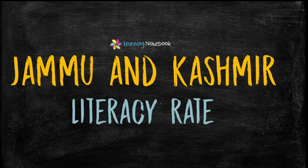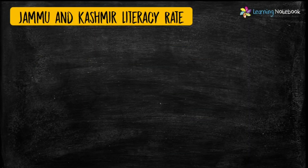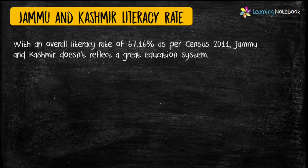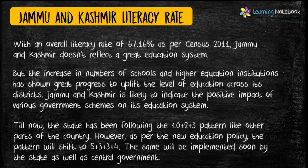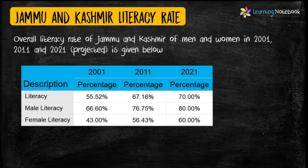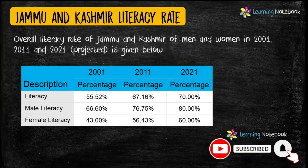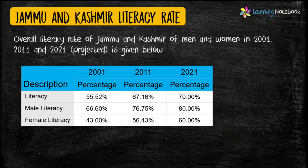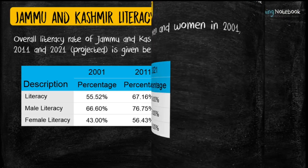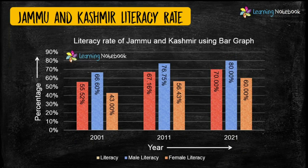Next idea is depicting literacy rate of Jammu and Kashmir for your Art Integrated Project. Here we have used a triple bar graph to show overall literacy rate, male literacy rate, and female literacy rate of Jammu and Kashmir.